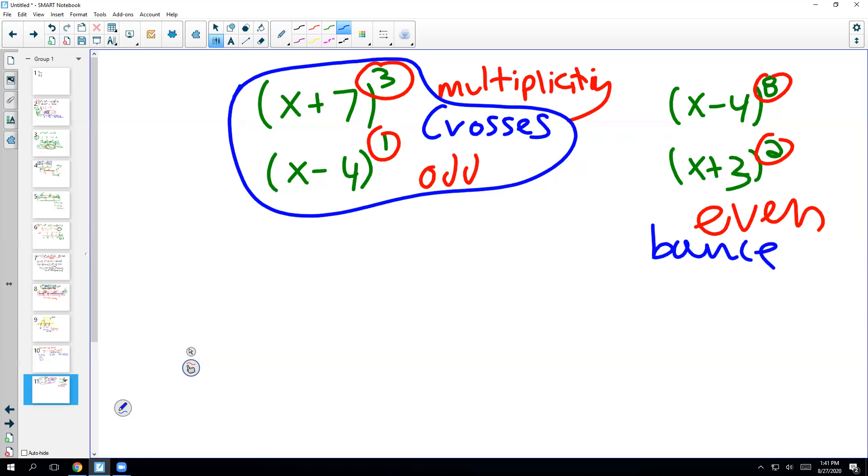And as we saw in the activity, a cross is going to look something like this. It's going to cross through the axis. And a bounce looks something like this, bounces off the axis.